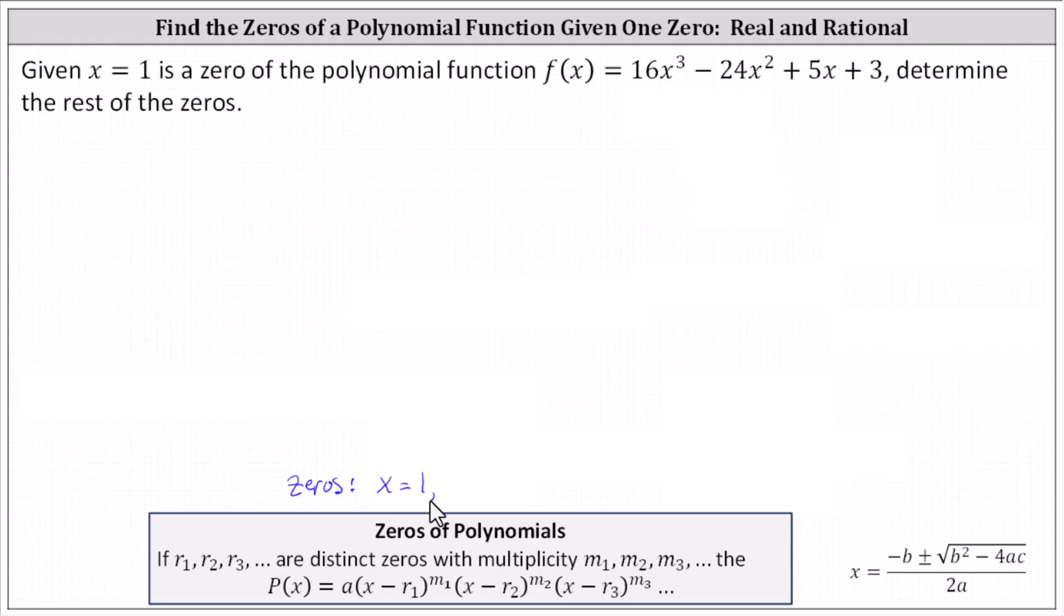Even if we weren't given this zero, we could graph the polynomial function and determine the real rational zeros by determining the x-intercepts of the function. Let's take a look at the graph.